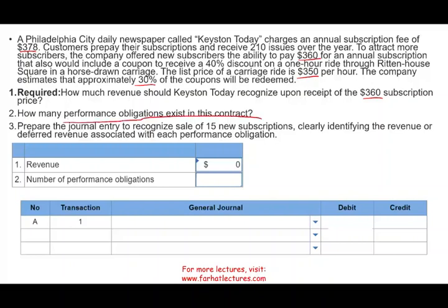The second question: how many performance obligations exist in this contract? That's important — you want to understand the difference between different performance obligations. The answer is two. First, we have to deliver the newspaper — that's one performance obligation. Second, we're also giving the customer the option to receive a 40% discount on the carriage ride. This is a second performance obligation because it's separate from delivering the newspaper. It's an option that conveys to the customer a certain right — the right to go on that ride.